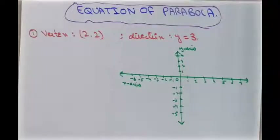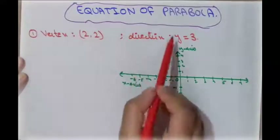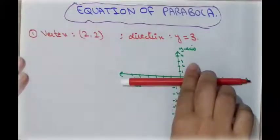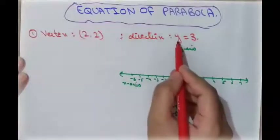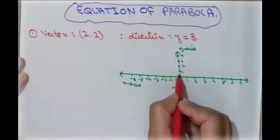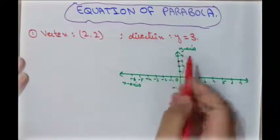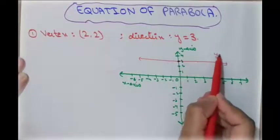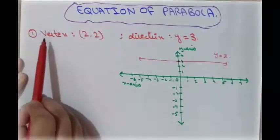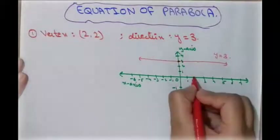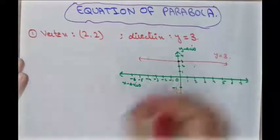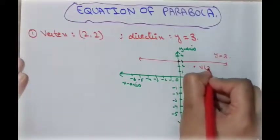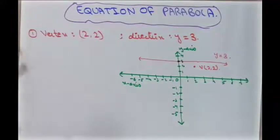Before finding the equation of the parabola, we first plot the given information on a graph. The directrix line is y = 3, shown here on the graph. The y-axis has a point at 3, so we draw a horizontal line there — this is the directrix line y = 3. The vertex point is (2, 2).